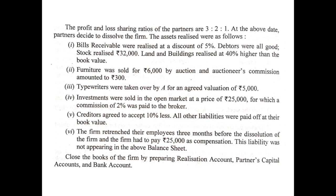These are the assets realized, shown on the credit side of the realization account: by bank (assets realized). You can club the amount and show it together. Since it increases the bank balance, it will also be shown on the debit side of the bank account: to realization account (assets realized). Point two: furniture was sold for 6,000 by auction and the auctioneer's commission was Rs. 300. So furniture net realized is 6,000 minus 300 = 5,700.